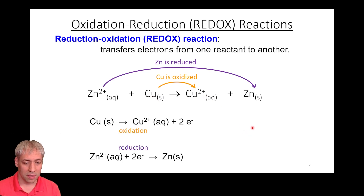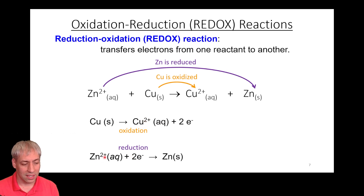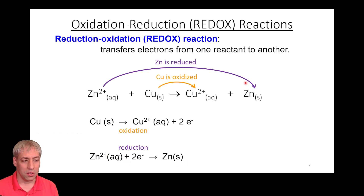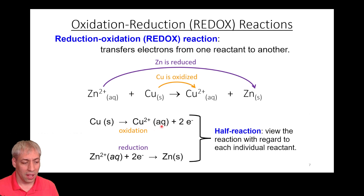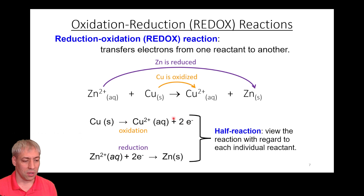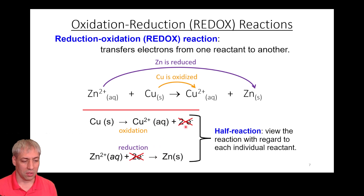Breaking this down into half reactions: Cu⁰ gives up two electrons to become Cu²⁺ (oxidation), and Zn²⁺ gains two electrons to become Zn⁰ (reduction). Combining those two half reactions gives the overall redox reaction. Electrons are products in oxidation and reactants in reduction. The electrons cancel out, and you get Cu⁰ + Zn²⁺ → Cu²⁺ + Zn⁰ as the overall reaction.